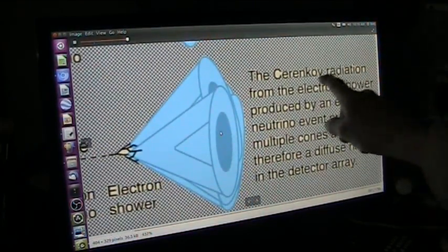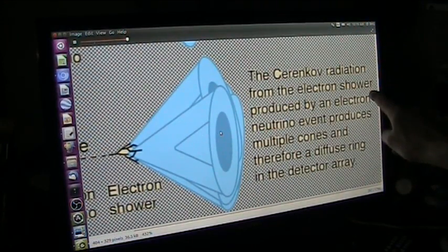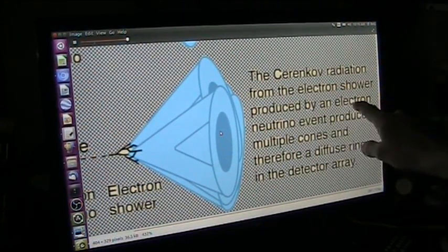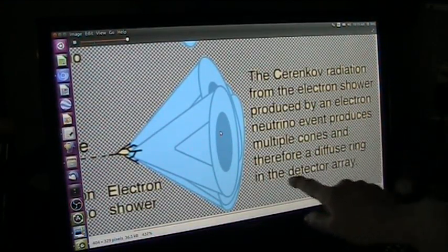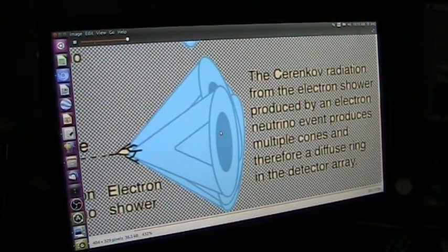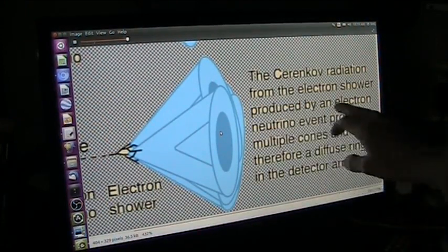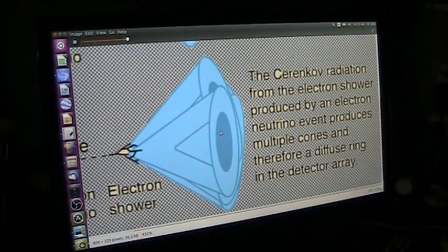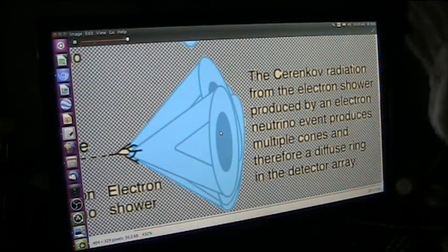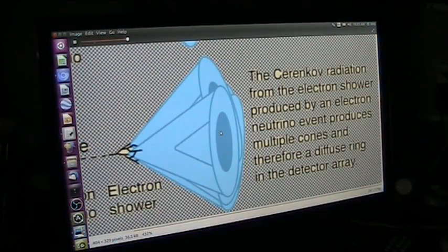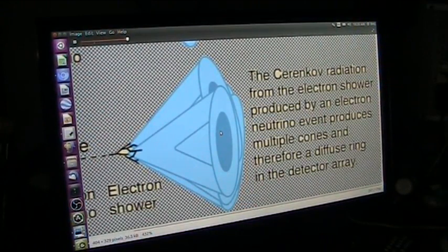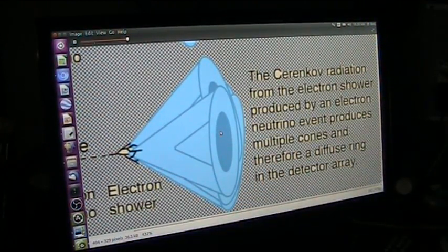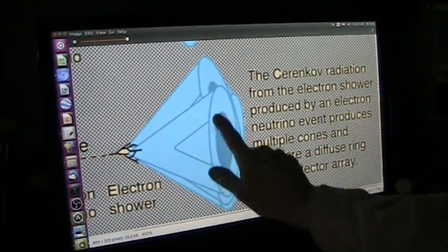Cherenkov radiation from the electron shower. I showed you that. Produced by an electron neutrino event, produces multiple cones, and therefore a diffuse ring in the detector array. It's exactly what I showed. The reason it does this is because it's accelerated, which is exactly what I showed. And it creates Cherenkov radiation, which is exactly what I showed, the white. It creates a shower, which is exactly what I showed, the electron shower. And it creates those fields that head the charged particle carriers, which would be these fields.